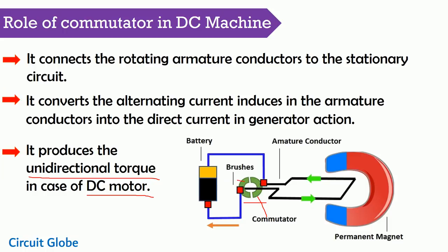Consider this commutator is on the positive polarity and this is on the negative polarity. The end of the armature conductor is connected to the commutator. If the conductor rotates, that means the commutator also rotates and their polarity changes. Consider through this commutator the current moves inside the conductor and through this commutator the current moves outside the conductor. That means this commutator always tries to move the conductor in the direction of the magnetic field, and hence we can say that commutator produces the unidirectional torque in the DC motor.